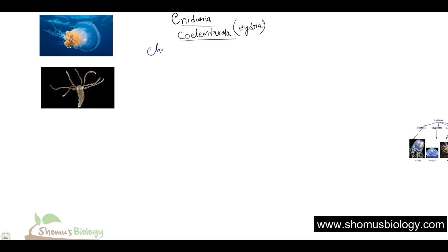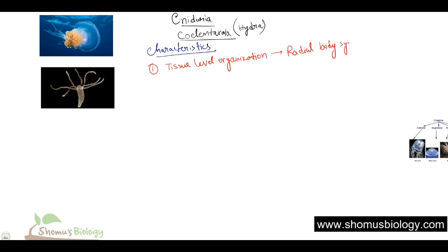Now the first thing I want to talk about is the general characteristics or properties of Cnidaria or Coelenterata. First, they have tissue-level organization. Second, they have radial body symmetry. There are two types: asymmetrical body (example was Porifera), radial body symmetry, and bilateral symmetry. Bilateral symmetry means if we cleave the organism with a vertical line, both sides are mirror images — which is not true in the case of Cnidaria, so we call them radial symmetry.